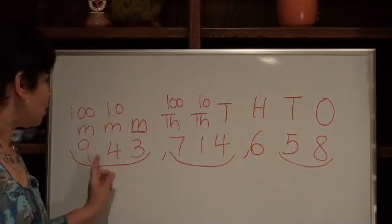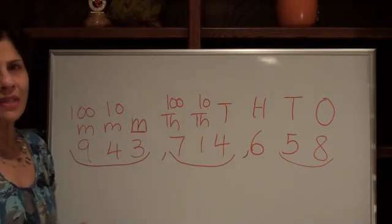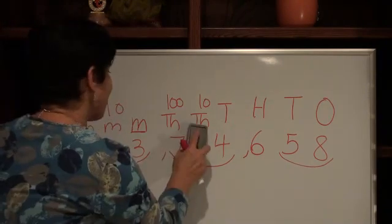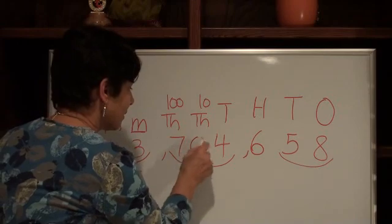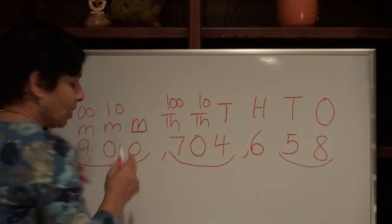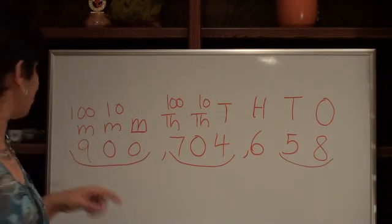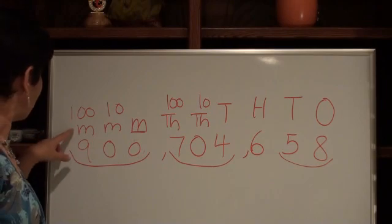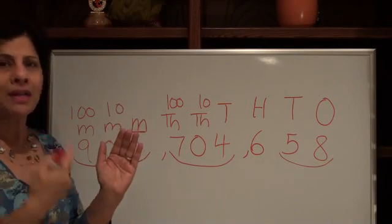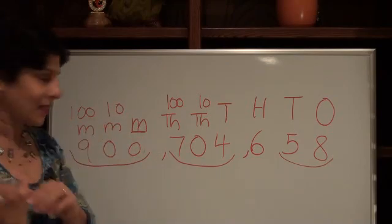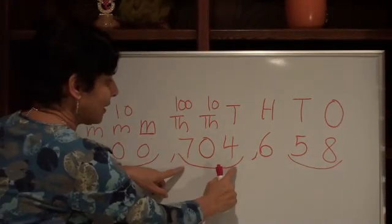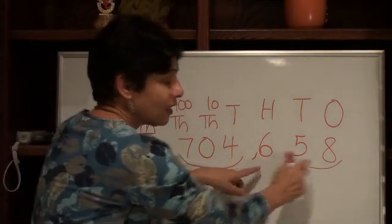Now most often when you have a digit in every place value, it becomes easy to read a number. But that's not how math works — sometimes you could have a zero, and that throws you off. Don't worry about it. Again, read the number, tell the boat. What's the number here? Nine hundred. So it's nine hundred million, seven hundred four thousand, six hundred fifty-eight. See how easy that was?